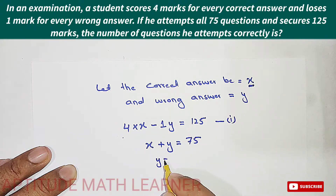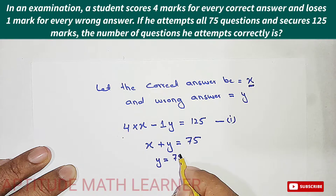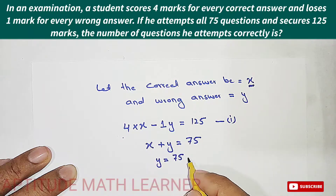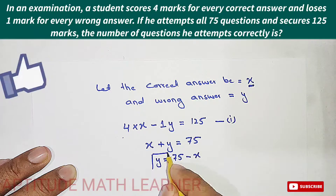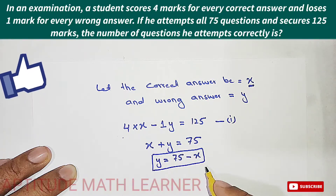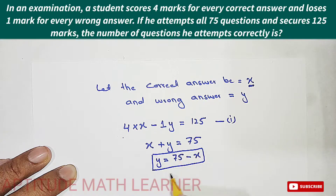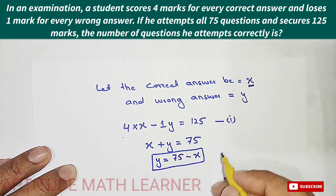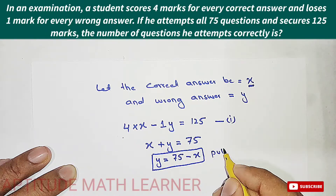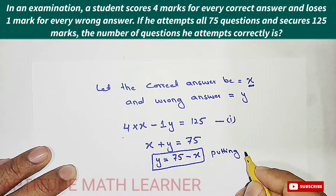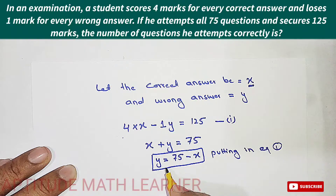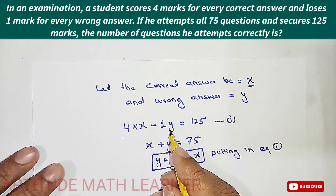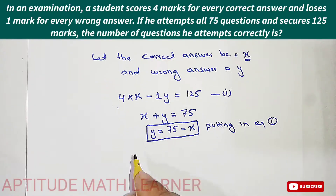To find the correct answer, we rearrange equation two. Y is equal to 75 minus X. We will now put this value of Y into equation one.